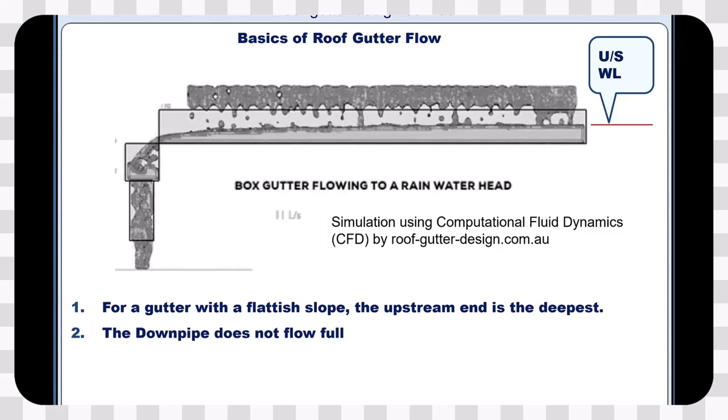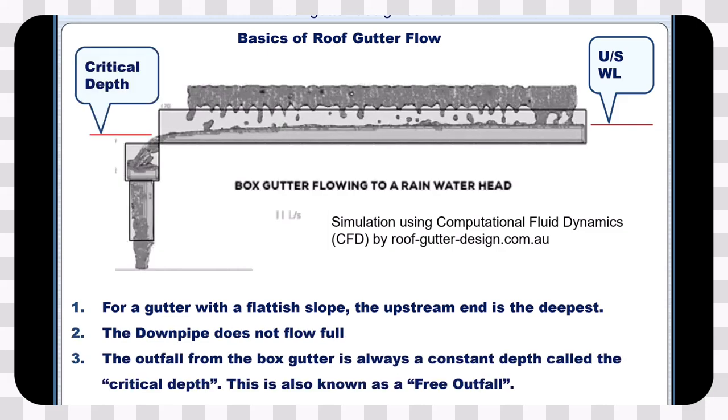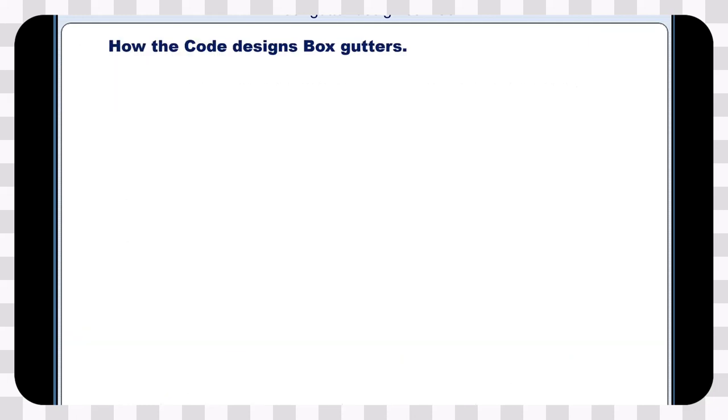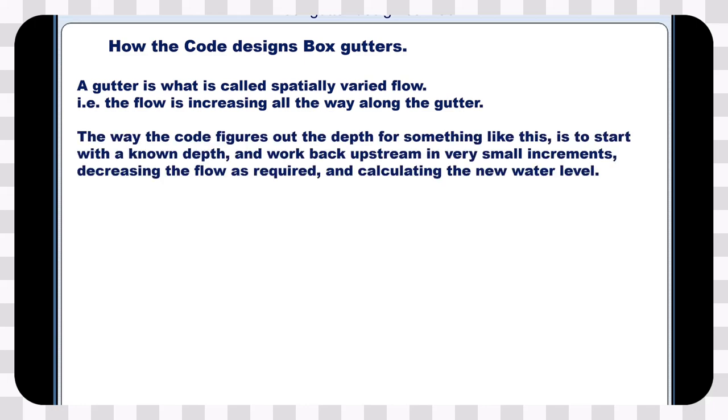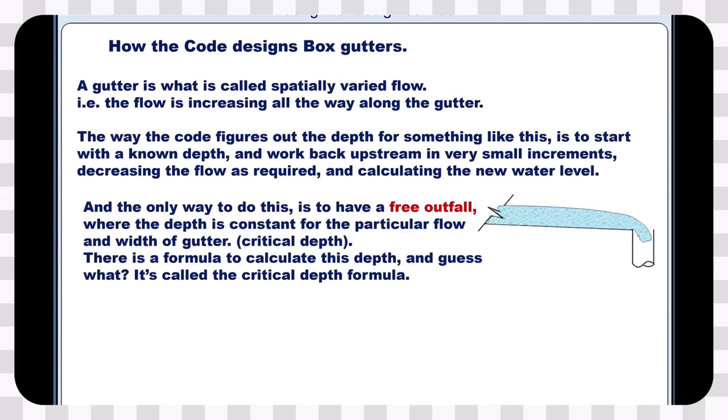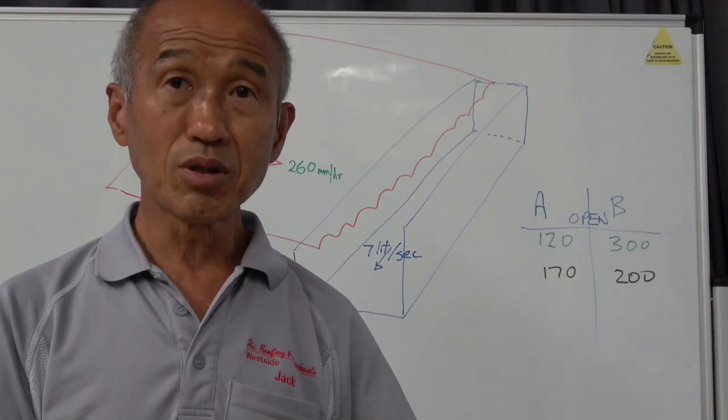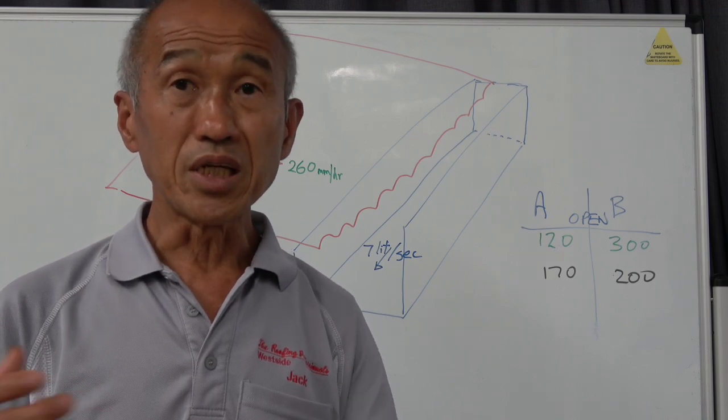So in a box gutter where you have a full width overflow out into a rain head, you hardly ever get any blockages because any leaves that fall on the box gutter get shot out with the water and goes into the rain head. If anything the rain head gets blocked up, but that's an issue external to the building and you don't have a problem inside the house.